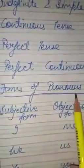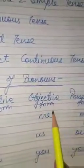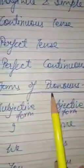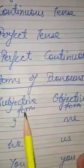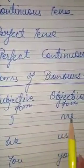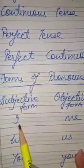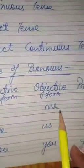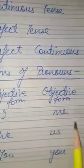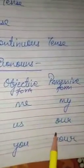Now, forms of pronouns. Pronouns have three types of forms: subjective form, objective form, and possessive form. For example, 'I' in subjective form becomes 'me' in objective form and 'my' in possessive form. 'We' in subjective case changes to 'us' in objective case and 'our' in possessive.